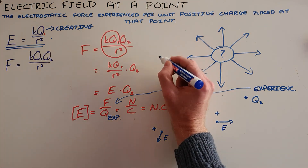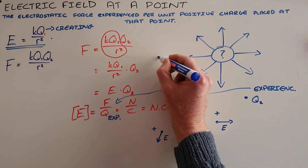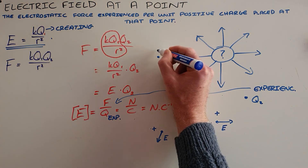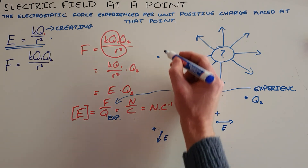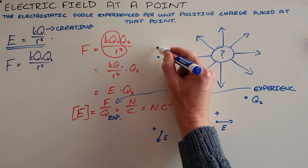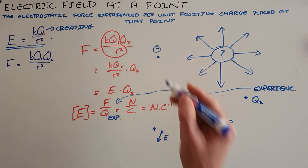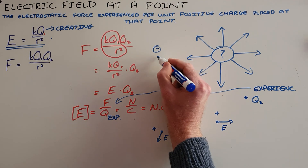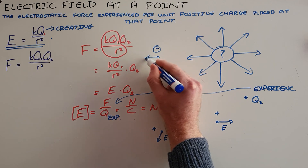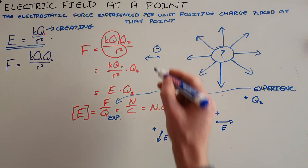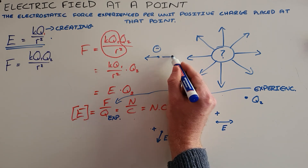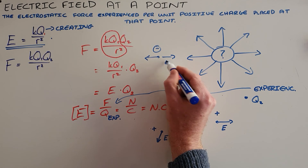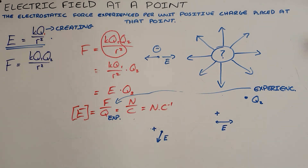Sometimes as an alternative, we are given that a negative charge experiences a force to the left at a point, which then tells us that our electric field is directed to the right at that point.